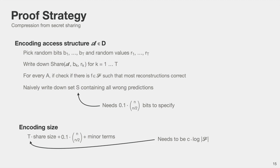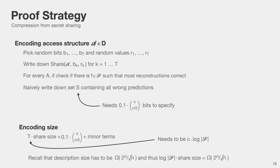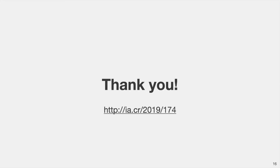For this encoding to work, t must be set to some constant times the log of the size of the function class. What we get is that the share size times log of the function class size must be at least 2^n. This means either the share size or the logarithm of the function class must be exponentially large, which is essentially the statement we wanted to prove. Thank you for your attention — I refer you to our paper, available on ePrint, for further details.